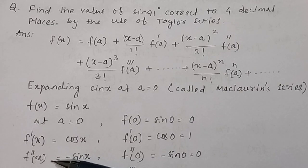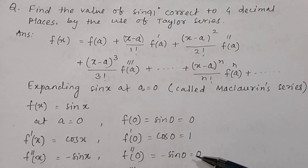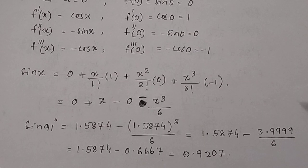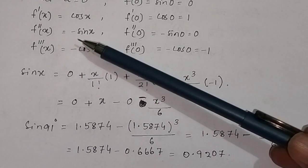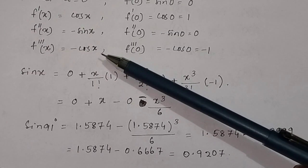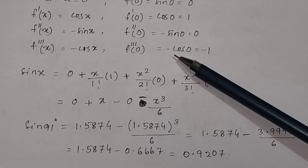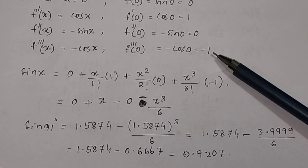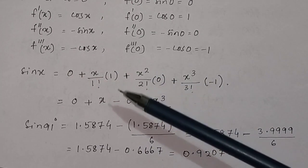The second derivative f''(x) is the derivative of cos x, which equals minus sin x. So f''(0) equals minus sin 0, which is equal to 0. The third derivative gives minus cos x, so f'''(0) equals minus cos 0, which is equal to minus 1. You can similarly find the fourth, fifth, and higher derivatives.